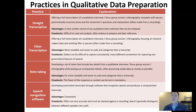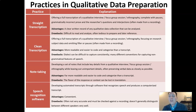Here are a few different methods that we might use for preparing our qualitative data, particularly if they're verbal. The first of these is a straight transcription, where we offer a full transcription of a qualitative interview, focus group session, or ethnography — complete with pauses, grammatically incorrect prose, tangents, the researcher's questions, and the researcher's interjections. We're often going to make that from a recording.